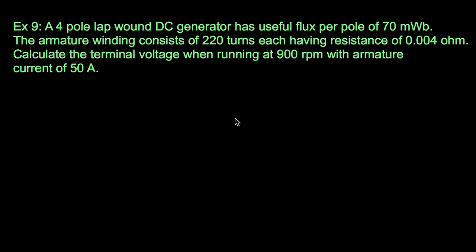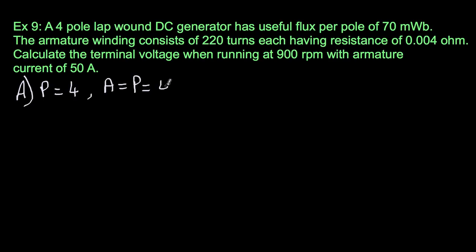Now Example 9: a 4-pole lap DC generator, so P = 4 and parallel paths A = 4. Useful flux per pole is 70 milliWebers, so φ = 0.07 Wb. The armature winding consists of 220 turns. Be careful here — one turn has two conductors, so Z = 220 × 2 = 440 conductors. Each turn has a resistance of 0.04 ohms, so resistance per turn is 0.004 ohm, and resistance per conductor is 0.002 ohm.